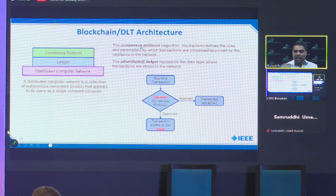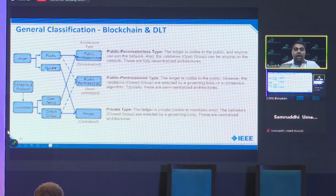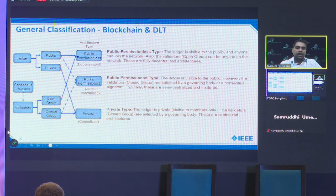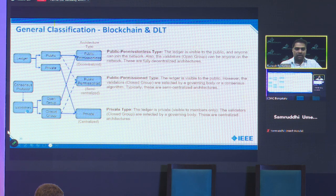Based on the ledger and consensus protocol concepts, you can come up with different blockchain architecture types. The ledger can be public or private — like a Google Sheet that's either publicly visible or restricted to a conference attendees only. The validators can be an open group, where anybody can be a validator, or a closed group where only selected people can validate transactions.